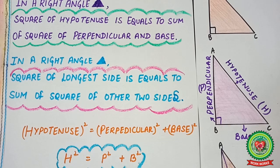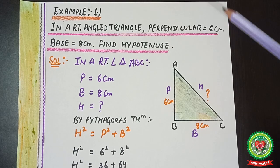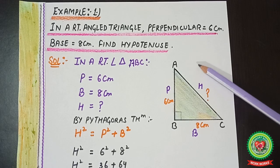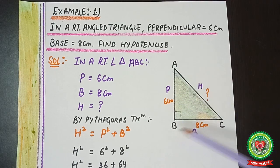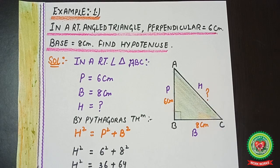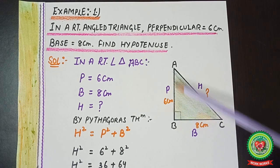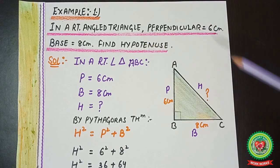Pythagoras theorem is generally used for finding the unknown side of a right-angle triangle. We will have a couple of examples where we find unknown sides using this theorem. Example one: In a right-angle triangle, perpendicular equals 6 centimeters and base equals 8 centimeters. Find the hypotenuse. First, draw the figure and name the triangle ABC, labeling the sides as P, B, and H.